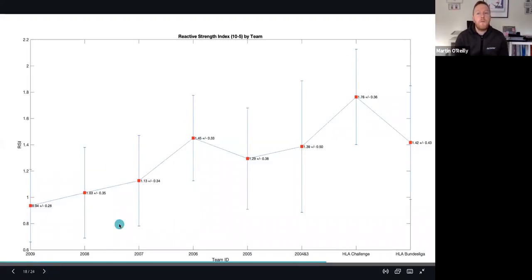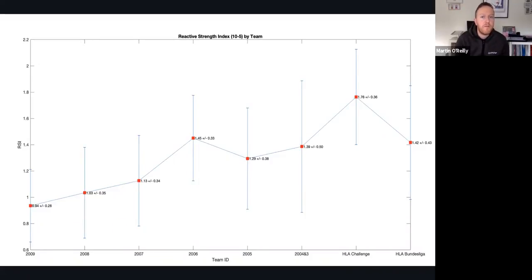For reactive strength, we saw an improvement from those born in 2009 of an average score of 0.94 up to an average score of 1.76 on the challenge team and a score of 1.42 in the Bundesliga team. One interesting observation here is that the average score for the players born in 2006 was 1.45. This is actually a really strong score comparative to players born the year after them and the year before them. The slightly older players born in 2005 had a lower score.